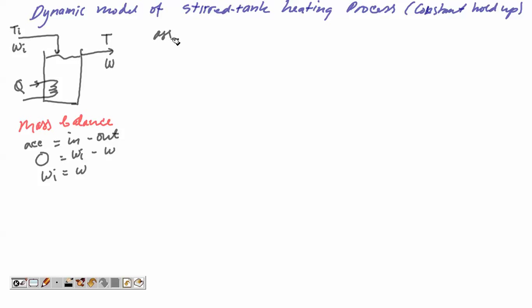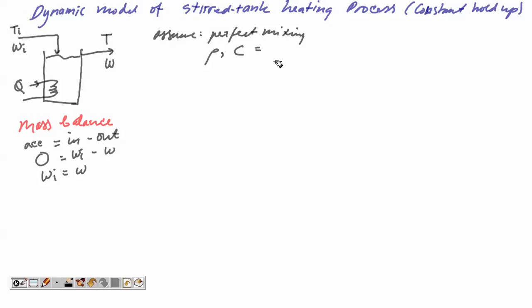We assume perfect mixing, meaning the temperature in the tank is always the same as the output stream temperature. We also assume that rho and Cp, the heat capacity, are constant, and that Q_loss is zero. The goal is to derive the dynamic model — that is, the differential equation dT/dt.